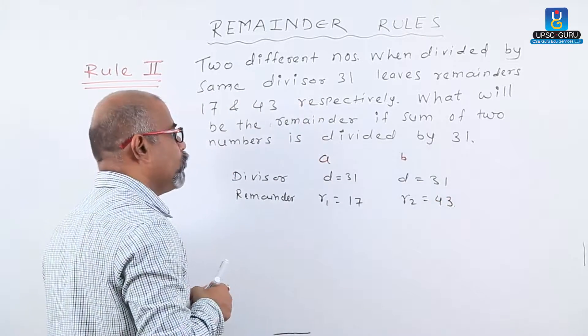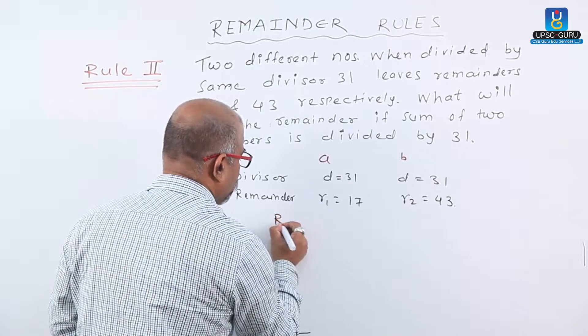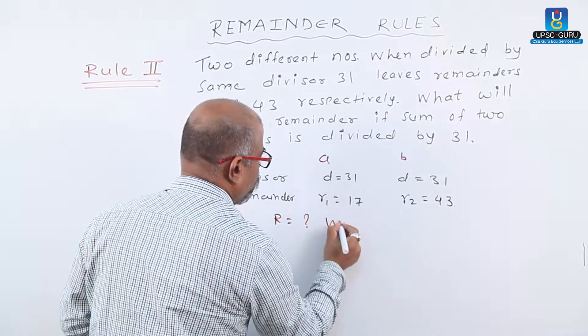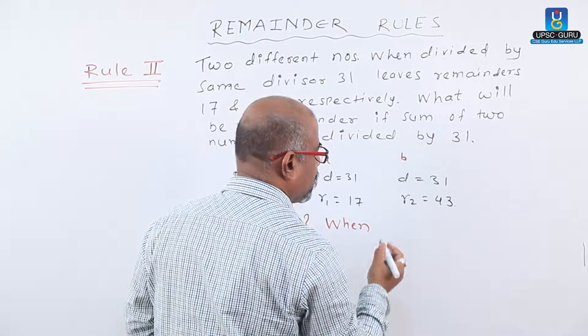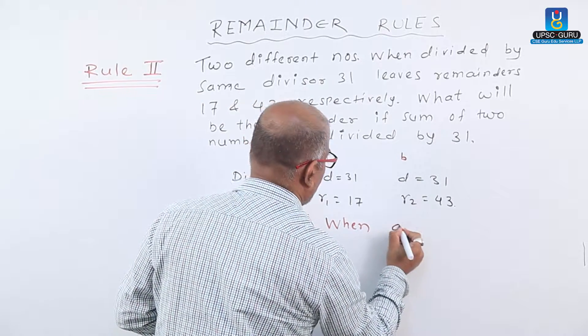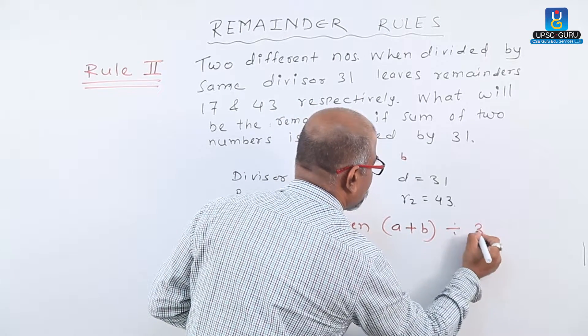The question is, what will be the remainder R when the sum of two numbers A plus B is divided by 31?